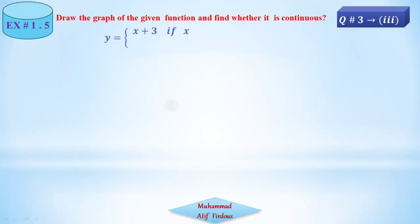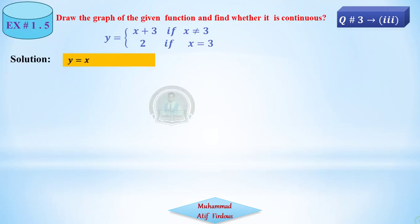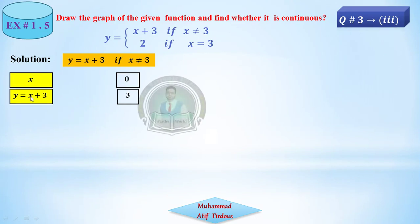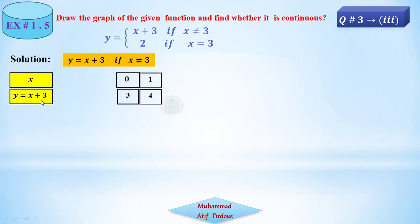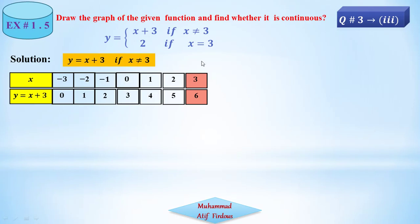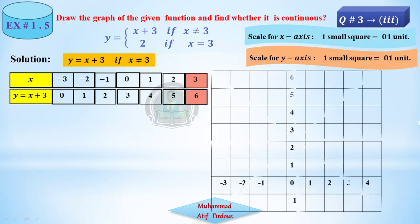Part 3 is similar to part 1. It also has two functions: y equals x plus 3 for x not equal to 3, and a separate value at x equals 3. Let's build the table: x equals 0 gives y equals 3; x equals 1 gives y equals 4; x equals 2 gives y equals 5. At x equals 3 the function is not defined by that rule — the value there is given separately. x equals minus 1 gives y equals 2; x equals minus 2 gives y equals 1; x equals minus 3 gives y equals 0.